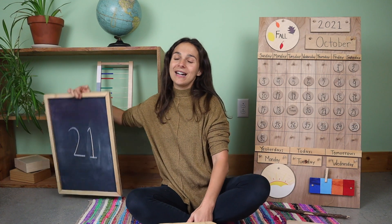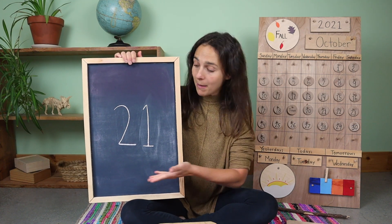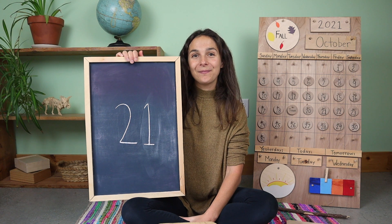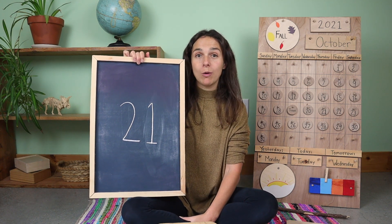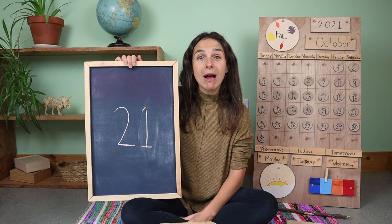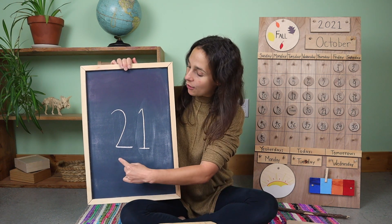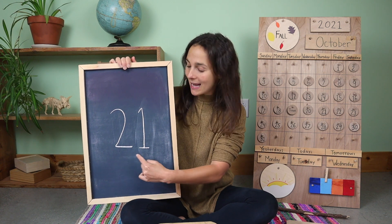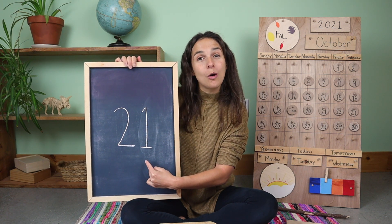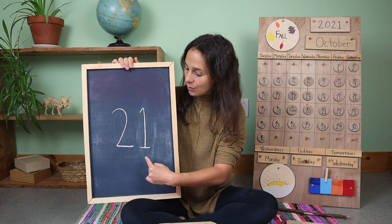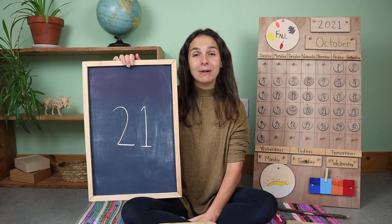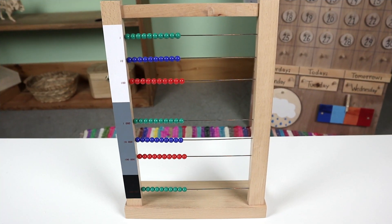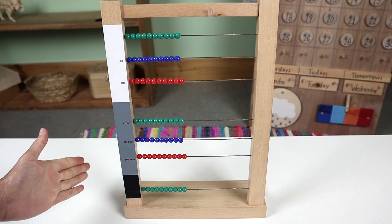And here is the number of the week. Do you remember what number this is? Twenty-one. Now, when you write the number twenty-one, because it's a double-digit number, you have to write two numbers. First you write the number two, and then you write the number one. Two, one — twenty-one. Let's count to the number twenty-one together using the large bead frame.